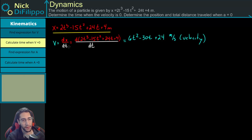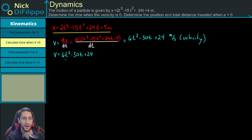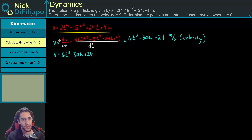Now, our velocity expression is 6t² - 30t + 24. To solve this, I need to either know the velocity or the time. We're told velocity is equal to zero, so I set velocity equal to zero and solve for t.